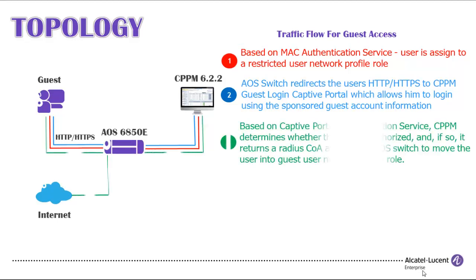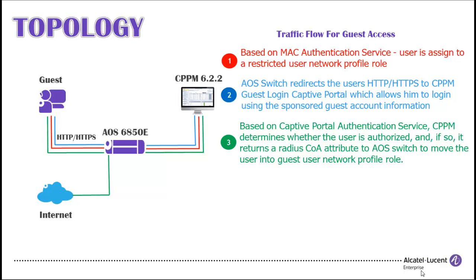Based on Captive Portal Authentication Service, CPPM determines whether the user is authorized. If so, it returns a RADIUS COA attribute to the AOS Switch to move the user into the guest user network profile role.